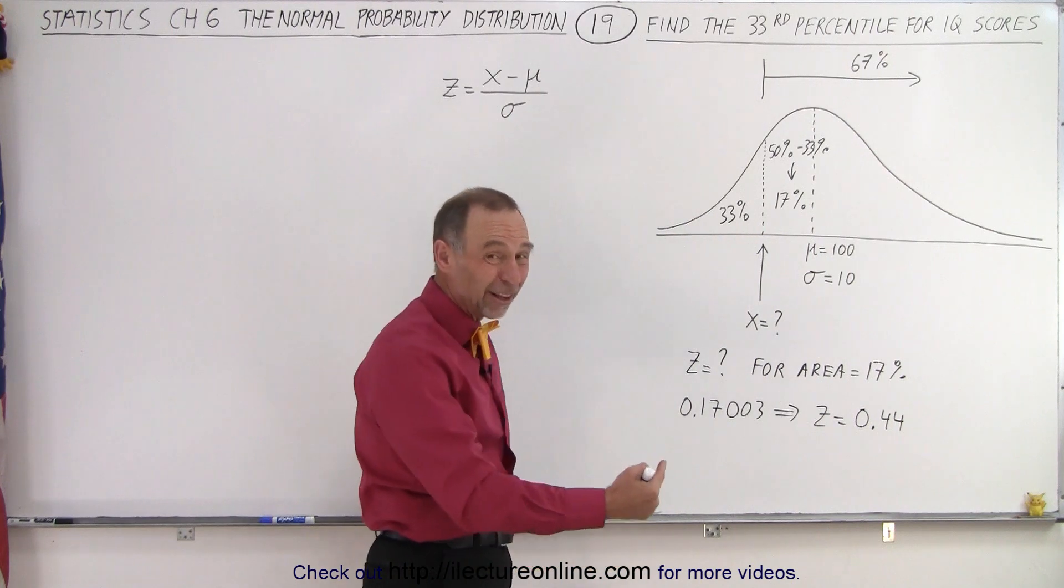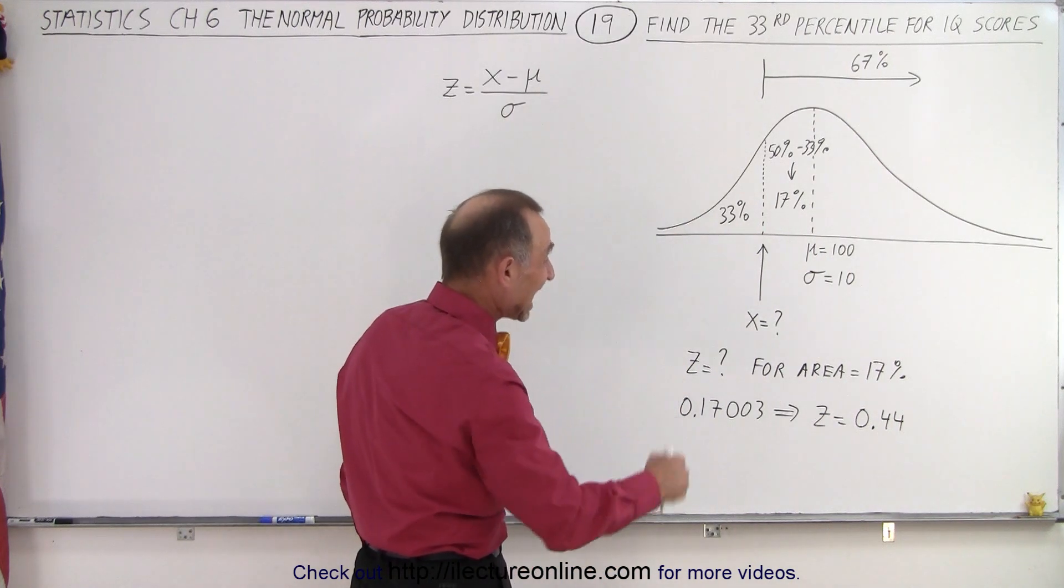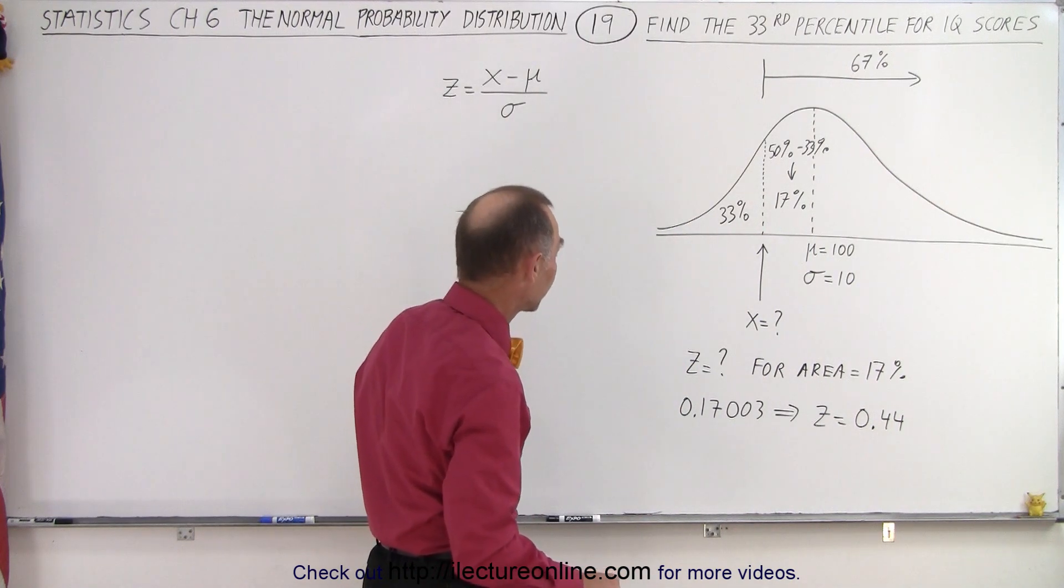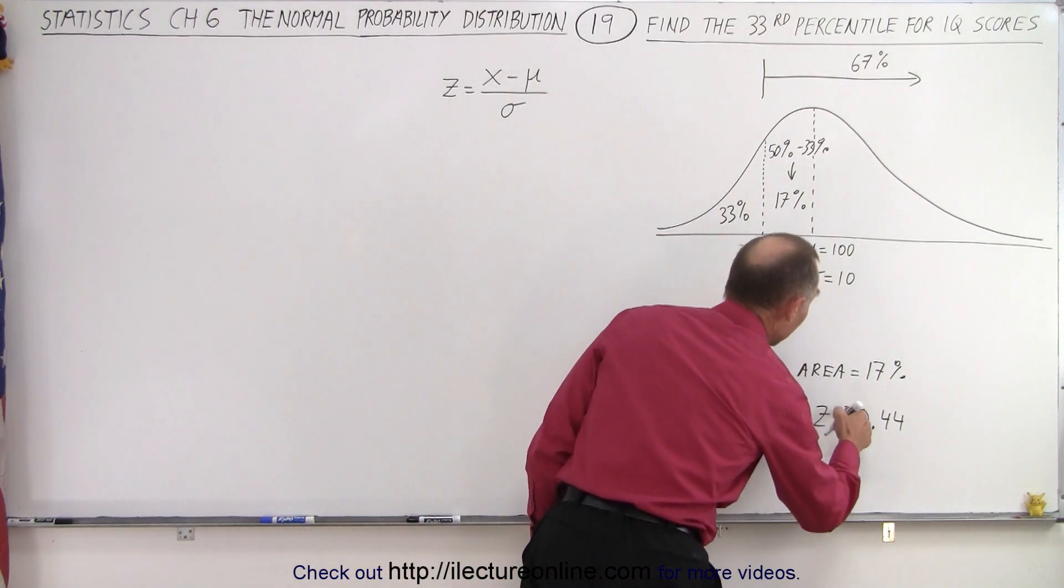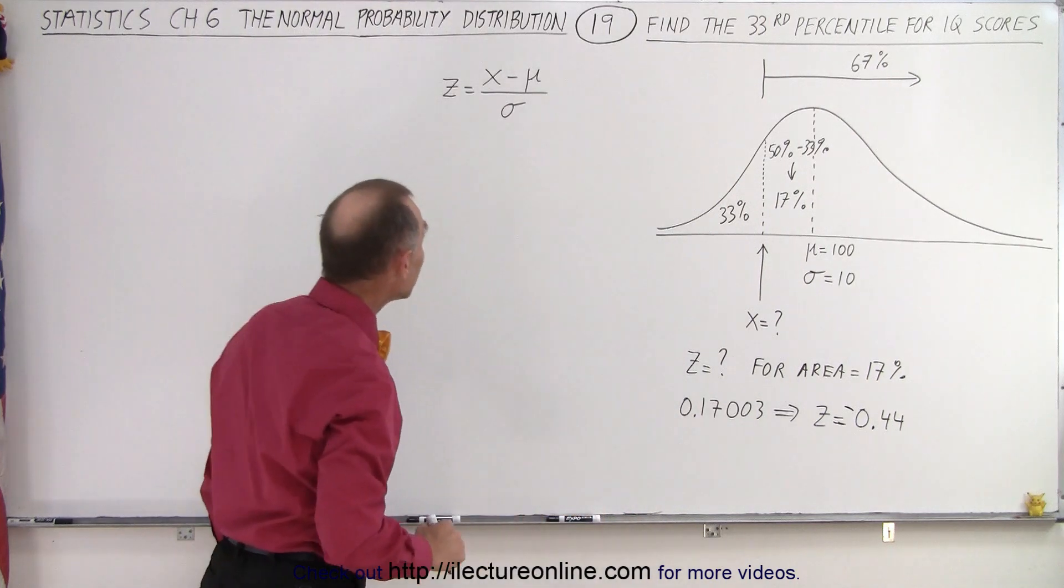And of course, since it's to the left of the mean, that's going to be a negative 0.44. So we'll just put in the negative sign here to indicate that we realize that's on the left side of the mean.